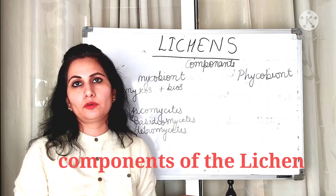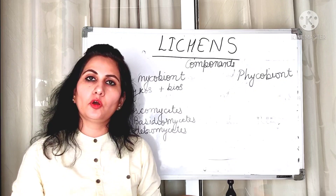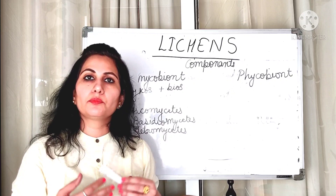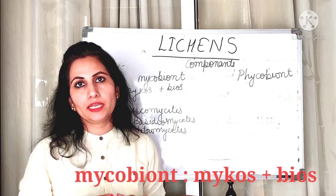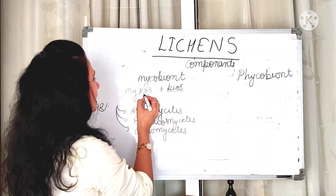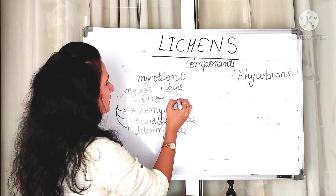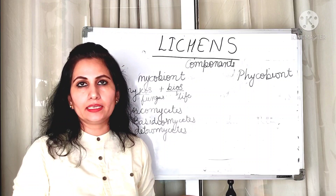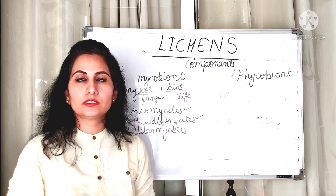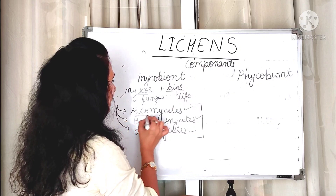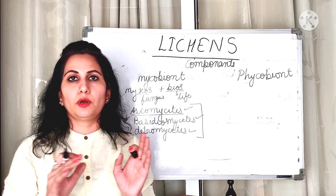Now we will talk about the components of lichen. There are two components: the mycobiont — the fungal component — and the phycobiont — the algal component. Mycobiont comes from 'mycos' meaning fungus and 'bios' meaning life. The fungi which form lichens are members of Ascomycetes, Basidiomycetes, and the imperfect fungi, Deuteromycetes. Of these, Ascomycetes is found 98% of the time.